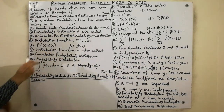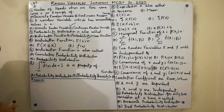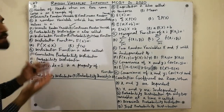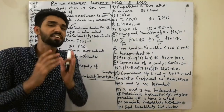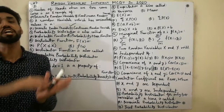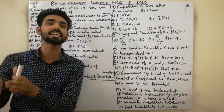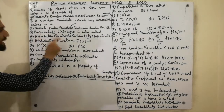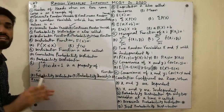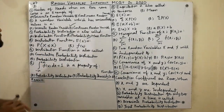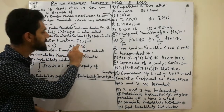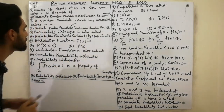The third MCQ: probability distribution is also called the probability mass function — a very important MCQ. Probability distribution is the arrangement of probabilities against each possible value of a discrete random variable. Remember that probability distribution always corresponds to a discrete random variable.